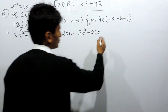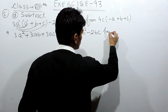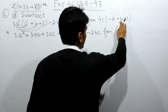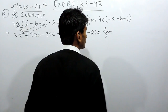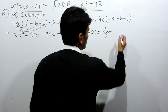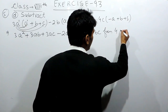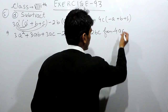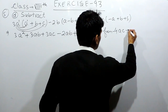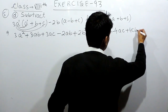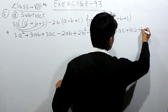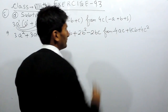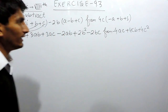And we have to subtract this from this expression, so let's solve this also. For that, we have to multiply 4c with all 3 terms. So 4c multiplied by a will give 4ac with negative sign, and this will be 4cb, and this will be 4c square — again, the base is same, so the power will be added.